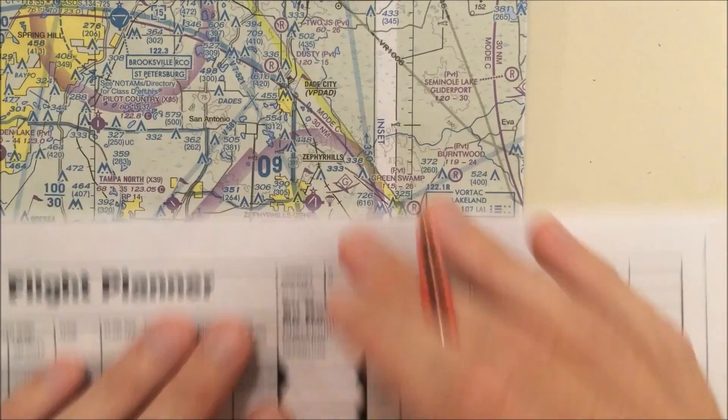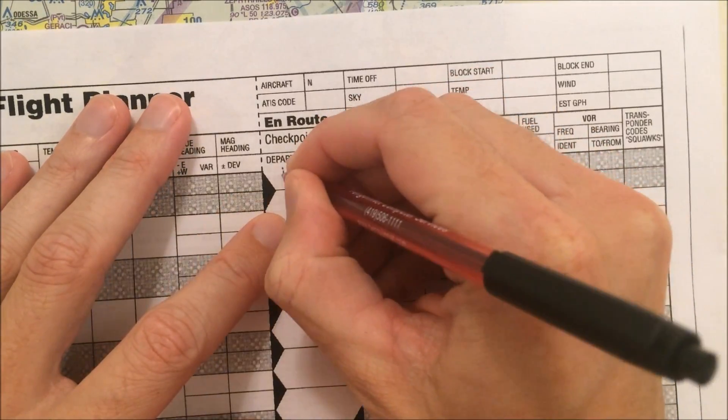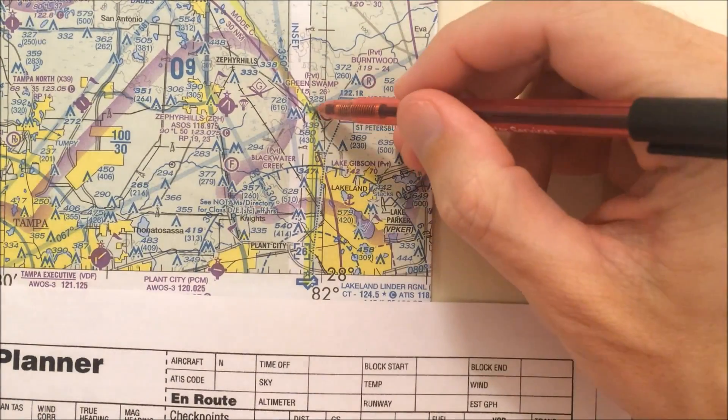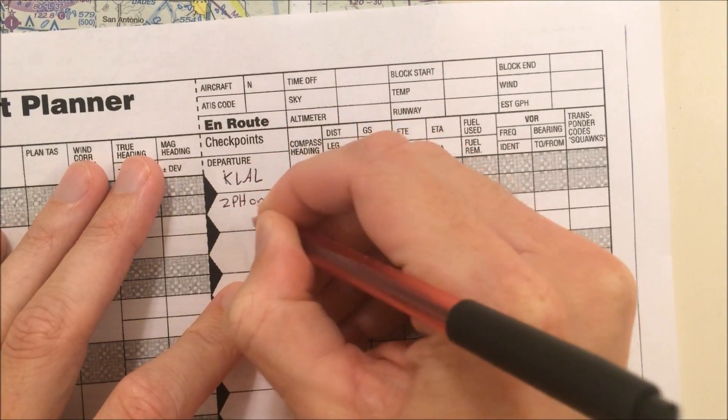So I'm going to start out by filling in my checkpoints. So my departure point in this example is Lakeland Airport, so I'm going to put in the code for Lakeland. My first checkpoint is going to be when Zephyr Hills Airport is directly to my left, so I'm going to put Zephyr Hills on left.